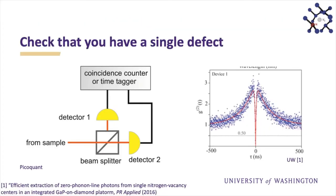To confirm a single defect, we split the photons on a beam splitter and do coincidence measurements — looking at the time delay between counts on each detector. A single quantum emitter cannot emit two photons at once, so the coincidence at zero time delay should go to zero. This g2 (autocorrelation) measurement confirms photons are coming from just one defect.